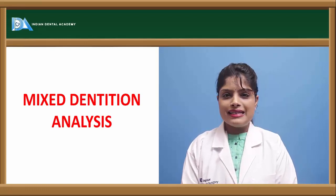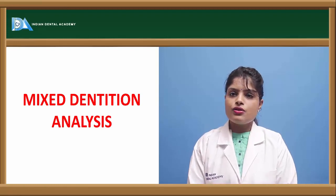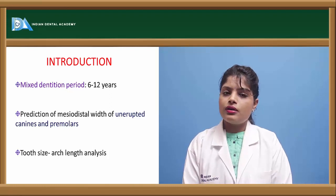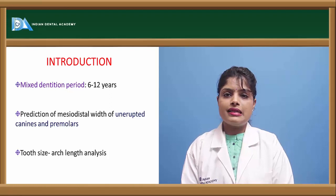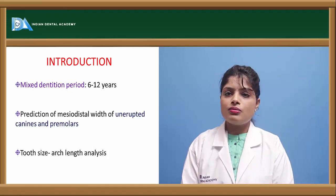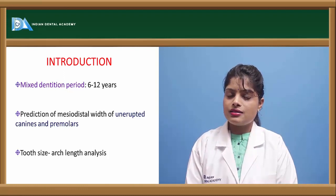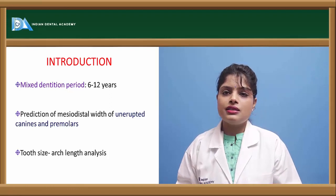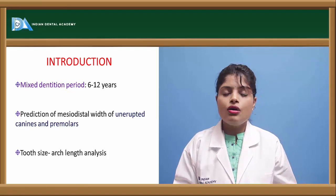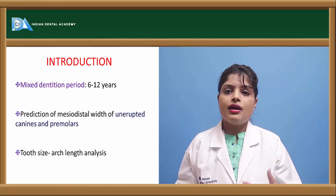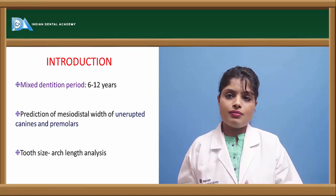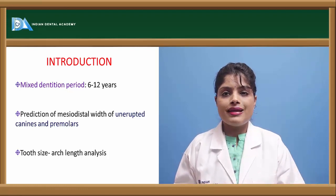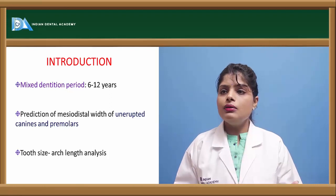Today I will be elaborating on the mixed dentition analysis, which is a part of model analysis. There are varying model analysis techniques for the permanent dentition like arch perimeter analysis, the Carey's analysis, the mandibular analysis, Korkov's analysis, and Bolton's analysis. These depend on the ratio or parameters or dimensions of the primary and permanent teeth, comparing the space available for the eruption of permanent teeth, and predicting whether crowding or spacing will occur in future dentition.